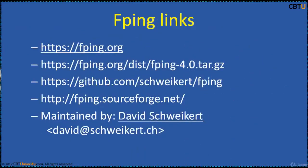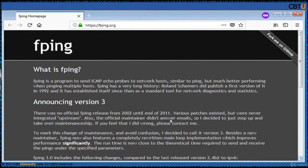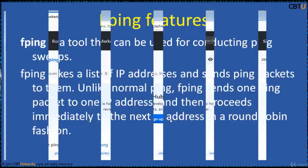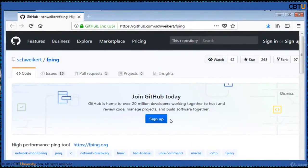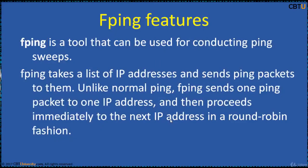These are some of the FBing links. This is the GitHub repository, maintained by David. This is the FBing web page. This is the FBing Git repository. FBing is a tool that can be used for conducting ping sweeps. FBing takes a list of IP addresses and sends ping packets to them. Unlike normal ping, FBing sends one packet to one IP address and then proceeds immediately to the next IP address in round-robin fashion.